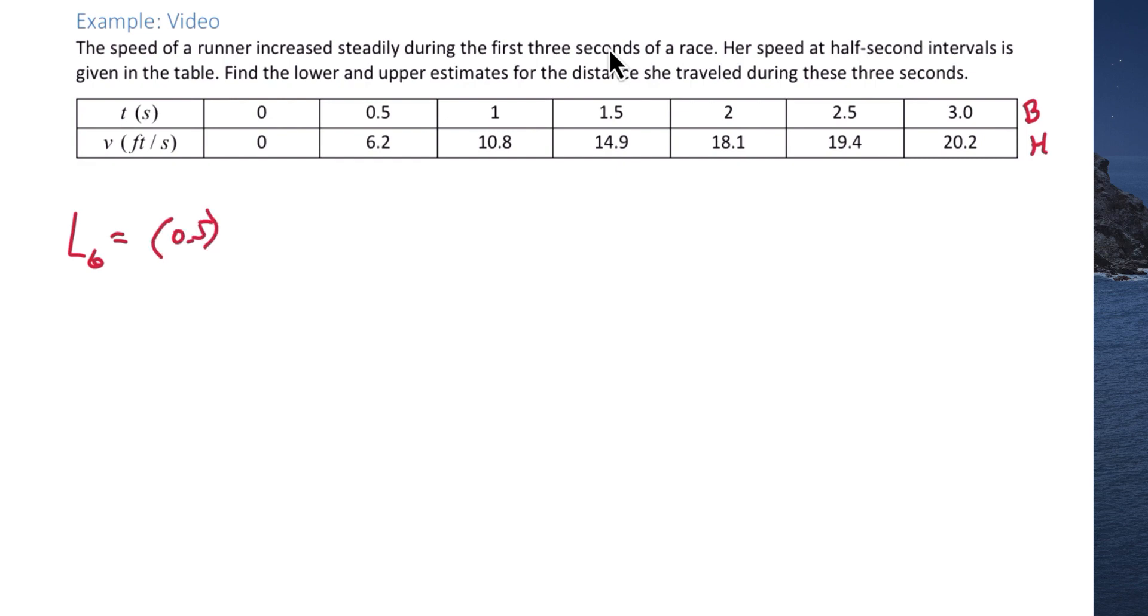And then we want to multiply by the height of each of these rectangles. And since we're using left-hand endpoints, we're going to start with 0. So we have 0.5 times 0, plus the base, 0.5,